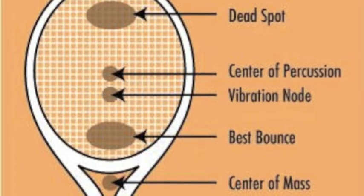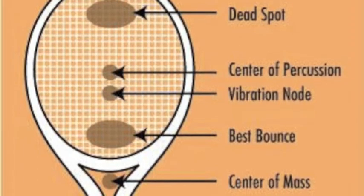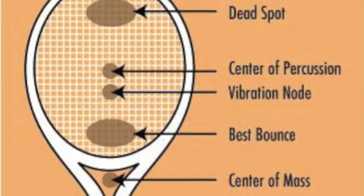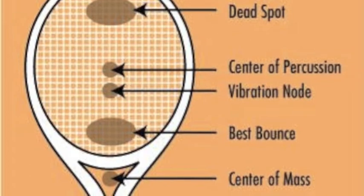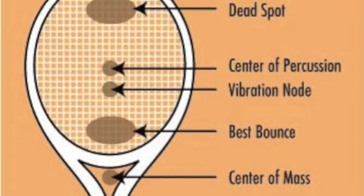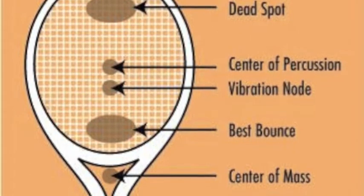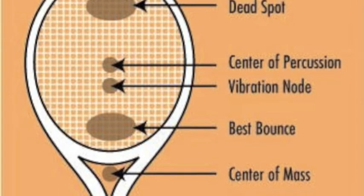Depending on where the ball hits on the racket, different forces will be produced in the handle. For example, at the COP, the forces going forward and backwards cancel out, whereas hitting at the tip or the throat produces more forward and backward forces respectively.